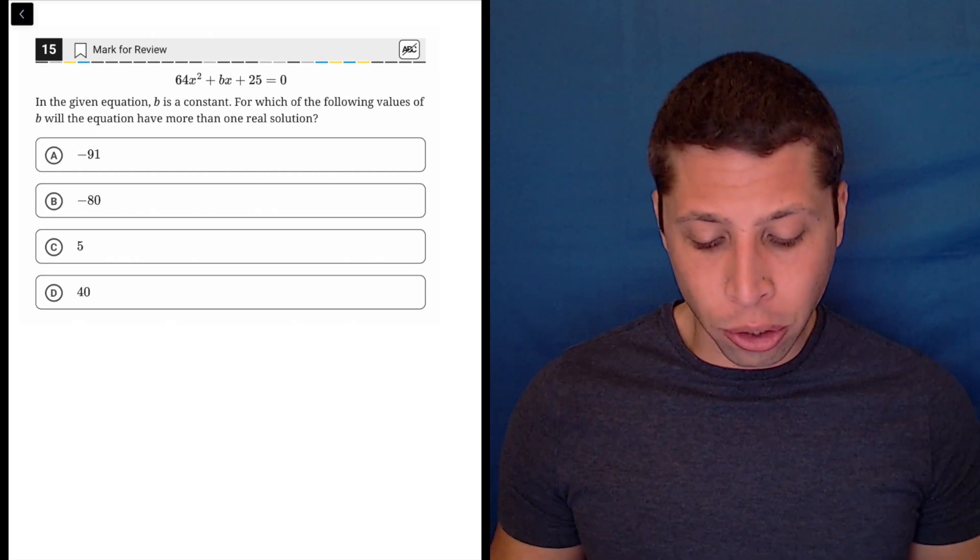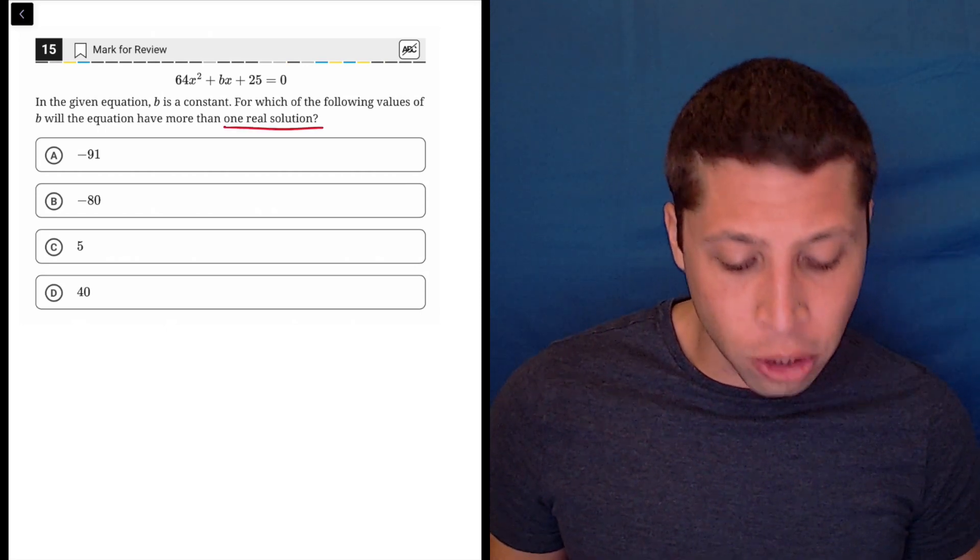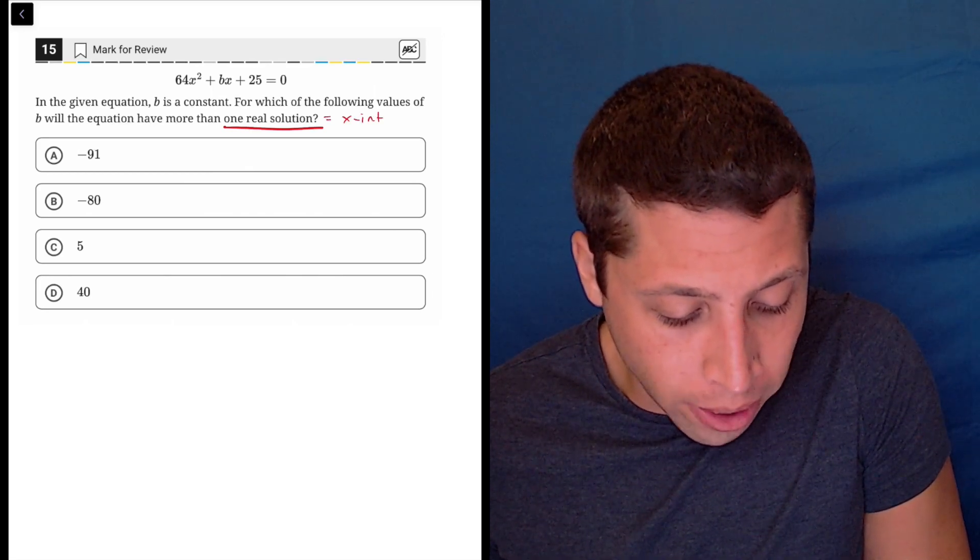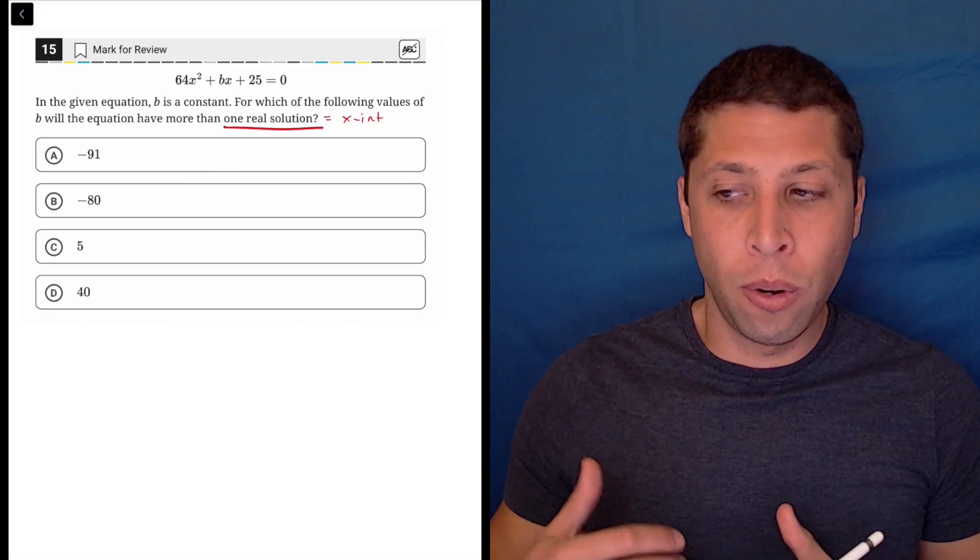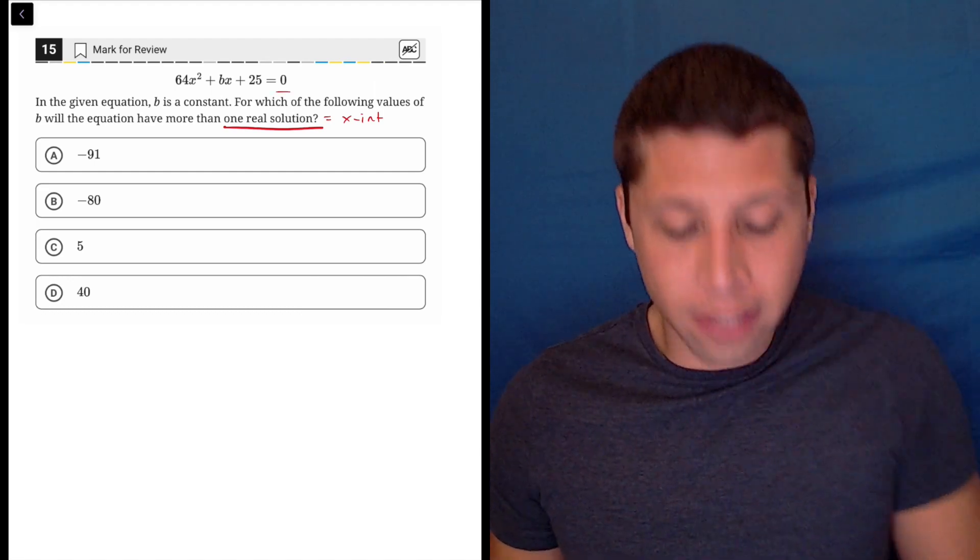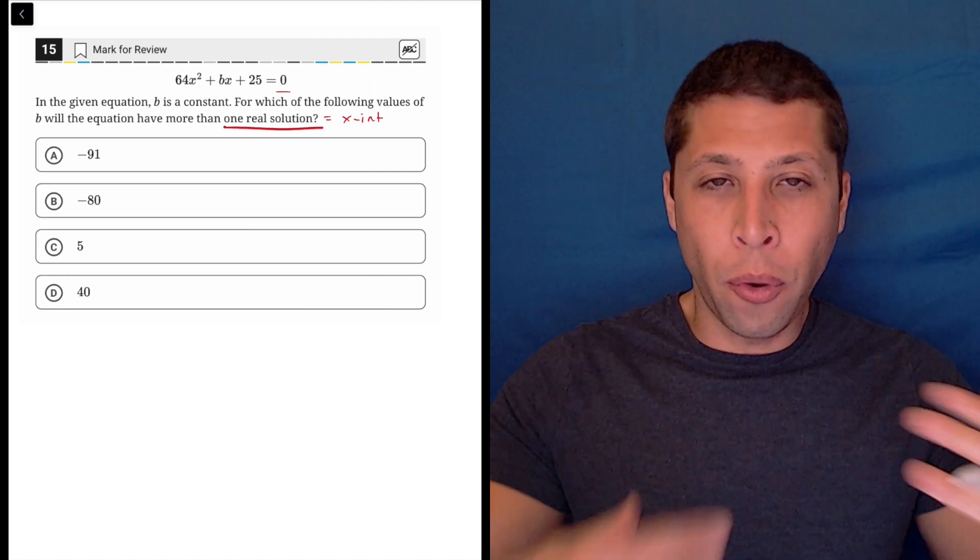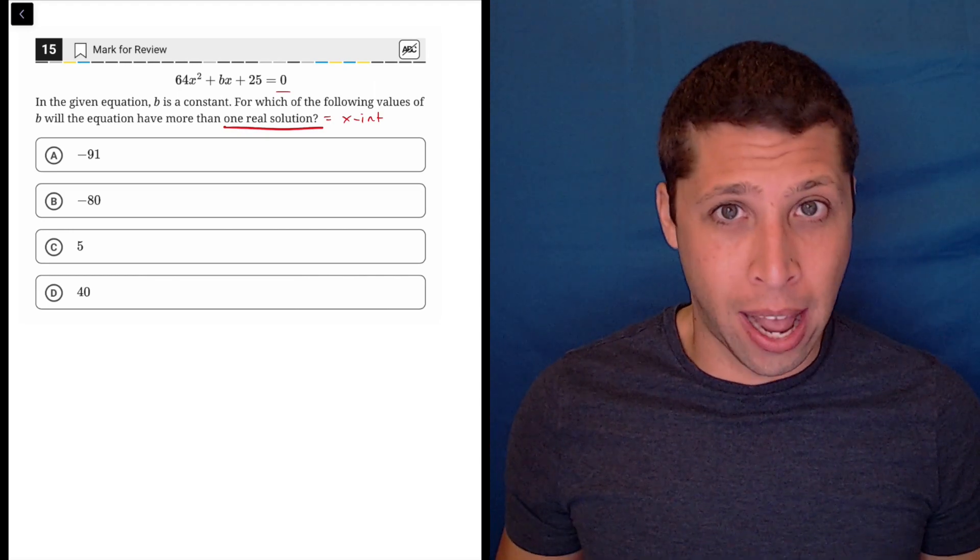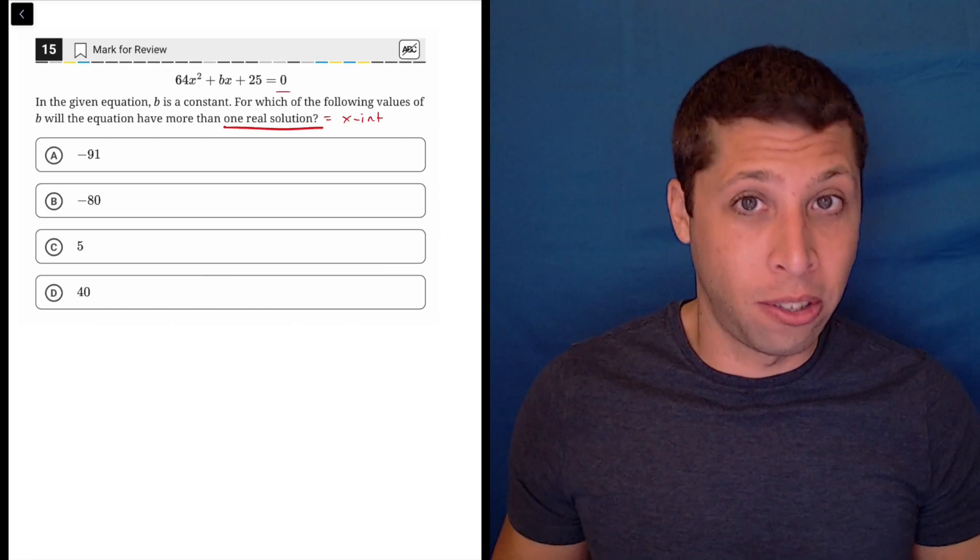When we talk about solutions, we're talking about x-intercepts. I think that's one annoying thing about this: because it's set equal to zero, what they're really asking for is if we just graphed this normally, how many x-intercepts would it have? Where is y equal to zero?